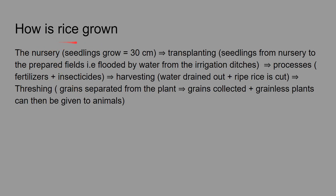Rice seedlings need to be 30 centimeters tall before they are moved. They are first grown in a nursery until they reach that height, then transplanted to prepared fields. Those fields are flooded with water from irrigation ditches, since rice needs water. Processing includes adding fertilizers and insecticides to ensure proper nutrients and prevent pest attacks. For harvest, water is drained, rice is cut, and then threshing separates the grains from the plants. Grains are collected, while the remaining plant material is given to animals as food.